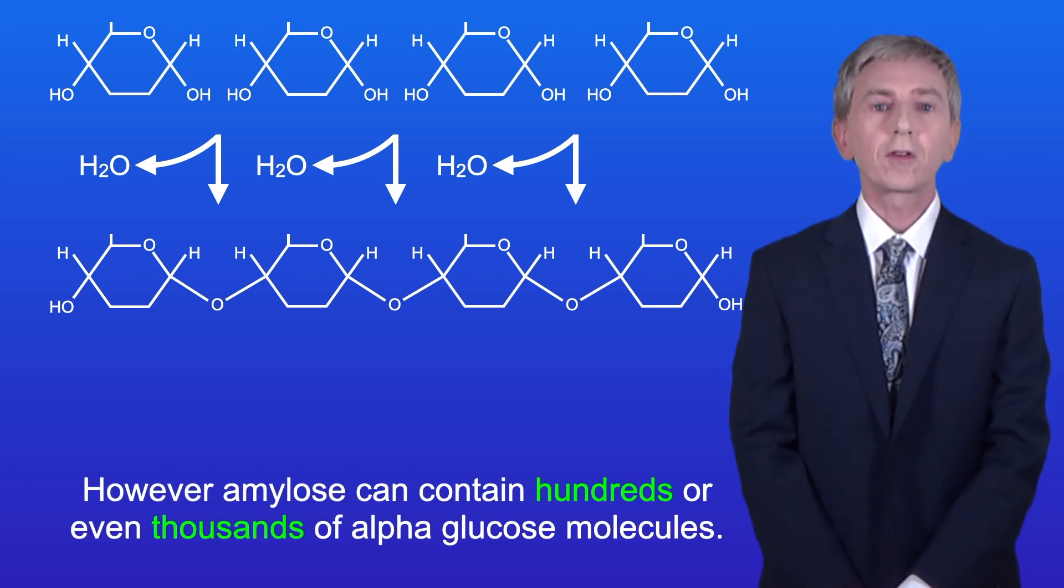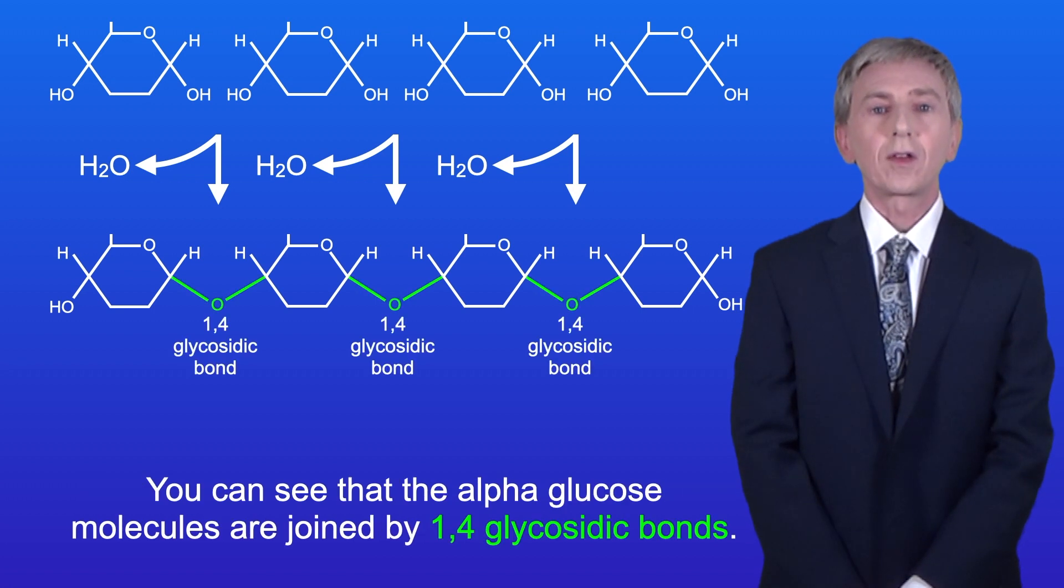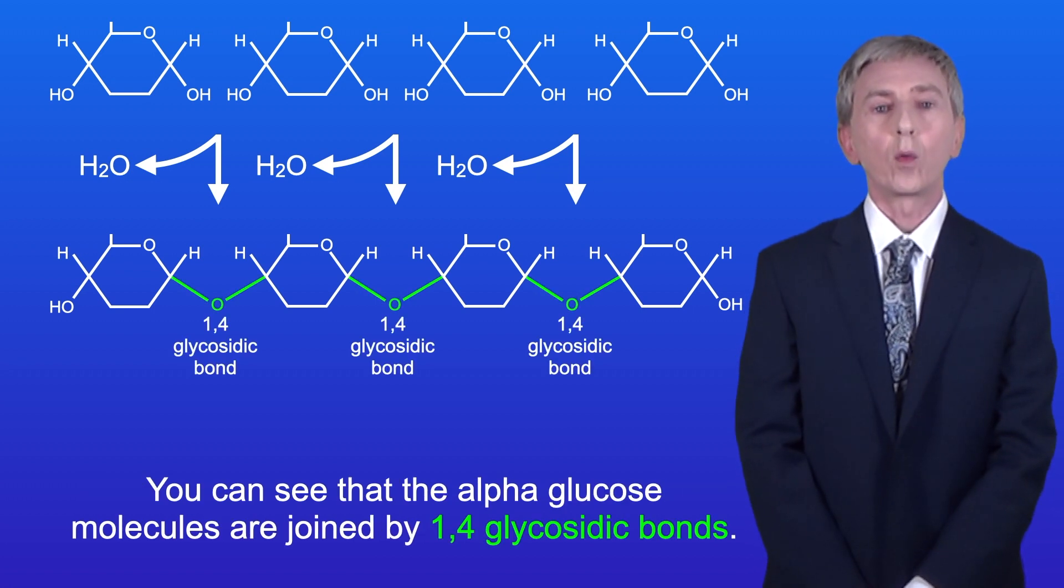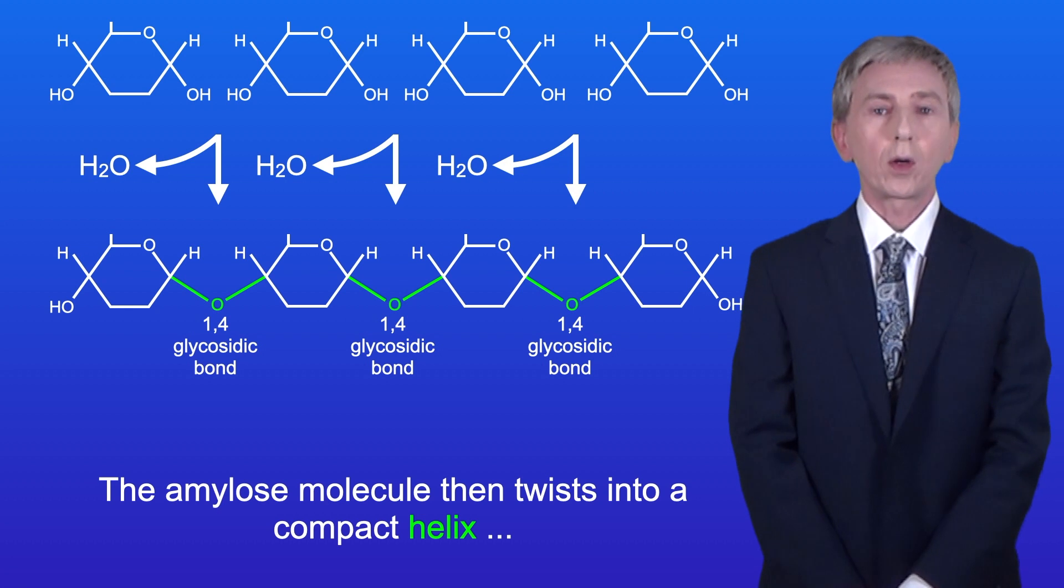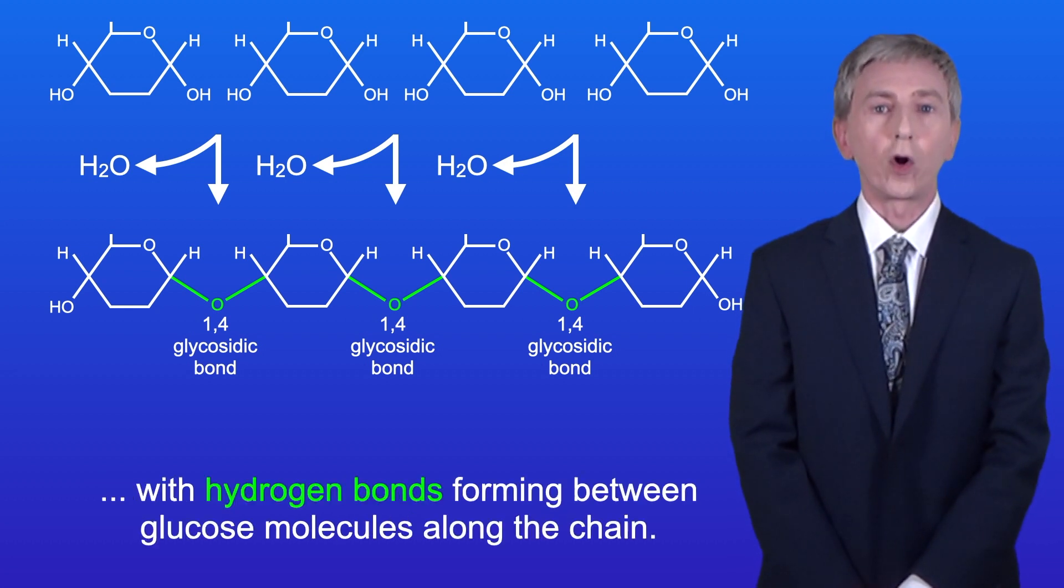However, amylose can contain hundreds or even thousands of alpha glucose molecules. Again, you can see that the alpha glucose molecules are joined by 1,4 glycosidic bonds, and each bond forms in a condensation reaction producing a molecule of water. The amylose molecule then twists into a compact helix with hydrogen bonds forming between glucose molecules along the chain.